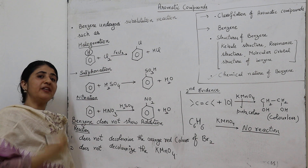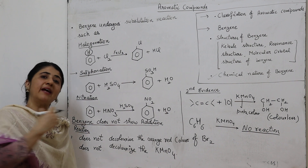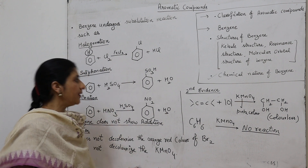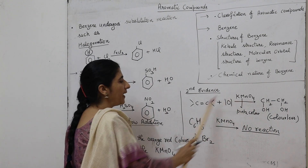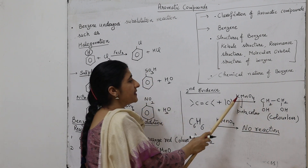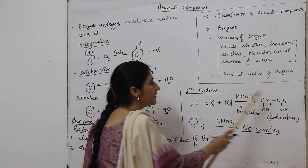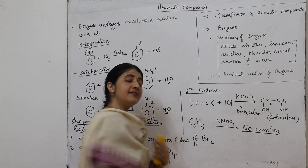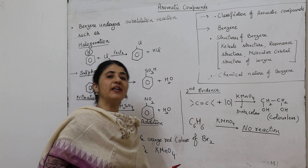This is the first proof that benzene does not show addition reactions, because it does not decolorize the orange-red color of bromine as shown by alkene molecules. The second evidence shows that benzene does not undergo addition reactions. Alkenes generally react with KMnO4 — when alkenes react with KMnO4, they undergo oxidation to form ethylene glycol. The color of KMnO4 is pink, but after this reaction we get a colorless compound, meaning the pink color of KMnO4 is discharged. The discharge of pink color shows the addition/oxidation reaction of alkenes with KMnO4.